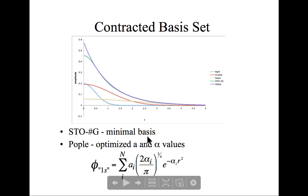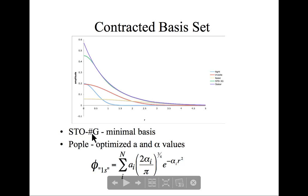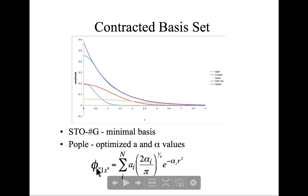These basis sets are called minimal basis sets because there is a single STO-nG function for every core and valence orbital an atom is expected to use in molecular bonding. For hydrogen, there would be only a single basis function corresponding to the 1s orbital. For carbon, there would be a single 1s, a single 2s, and three P's—a single 2px, 2py, and 2pz—totaling five functions. Pople optimized the values of A to best reproduce the shapes of those functions across the periodic table.